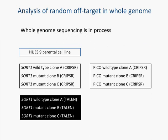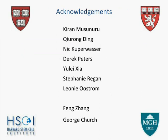To do this, we're performing a similar analysis as we've done with TALENs, where we're using a variety of sortilin clones, as well as another protein we're interested in called PICO, as well as the parental cell line, to do whole genome sequencing for an analysis of both random as well as predicted off-target effects in the whole genome. I'd like to thank the people that made the work possible: my colleague Kiran Musunuru, who spearheaded a lot of the genome editing efforts in the laboratory and has his own laboratory interested in cardiovascular diseases. Chi-Rong Ding, the talented postdoctoral fellow who did all of the cell-based work around sortilin and AKT2. Nick Kuverwasser, without whom we would not have the library that makes it possible to create TALENs in a couple of days, and the many other talented members including Derek Peters, Yule, Stephanie, and Leonie. And I must thank Feng Zhang and George Church for giving us access to the CRISPR-Cas technology early on. Thank you all for listening today.